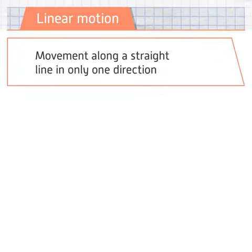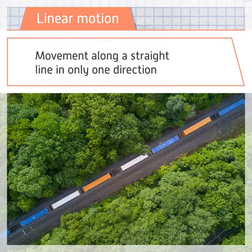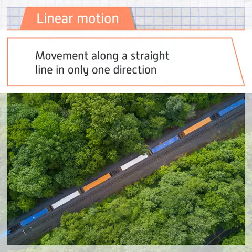Linear motion is movement along a straight line in only one direction. A mechanical example of this is a train travelling along a straight section of railway track.